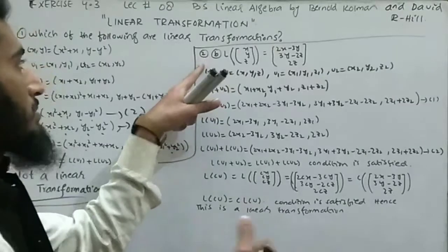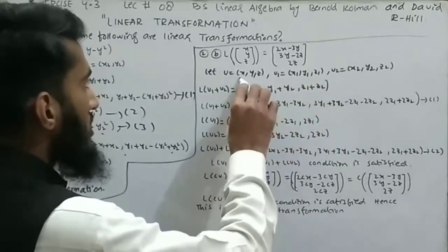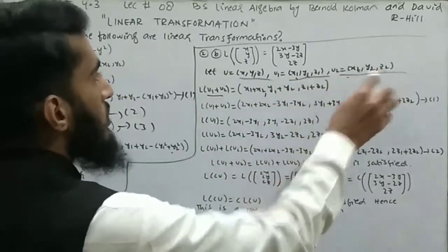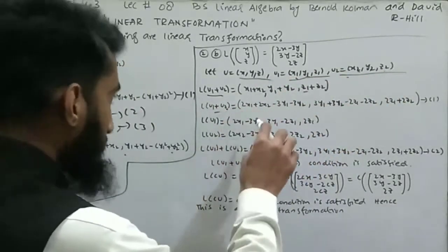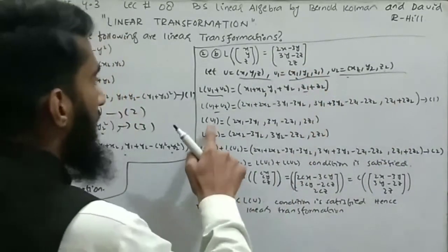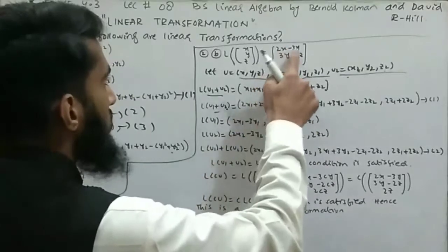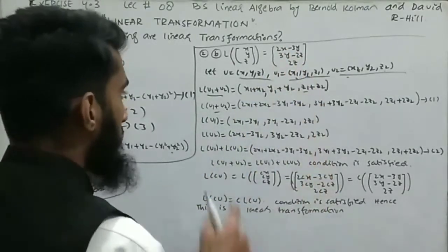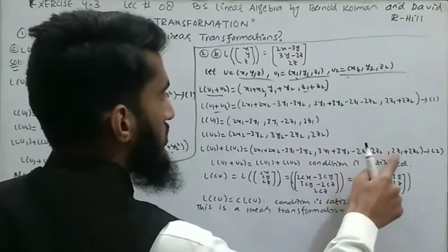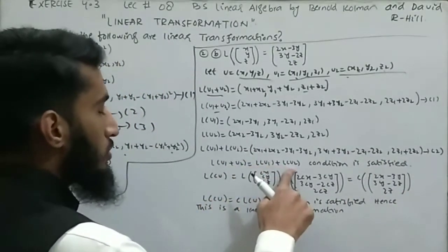Part B of question 2: L(x, y, z) = (2x-3y, 3y-2z, 2z). Let u1 = (x1, y1, z1), u2 = (x2, y2, z2). L(u1+u2): substitute x1+x2, y1+y2, z1+z2 to get (2(x1+x2)-3(y1+y2), 3(y1+y2)-2(z1+z2), 2(z1+z2)). L(u1)+L(u2): (2x1-3y1, 3y1-2z1, 2z1) + (2x2-3y2, 3y2-2z2, 2z2) = (2x1+2x2-3y1-3y2, 3y1+3y2-2z1-2z2, 2z1+2z2). Both are equal, so the first condition is satisfied.